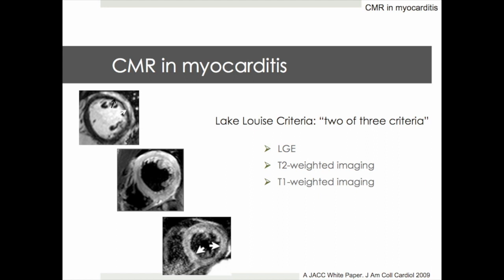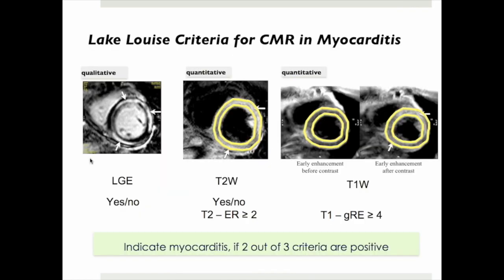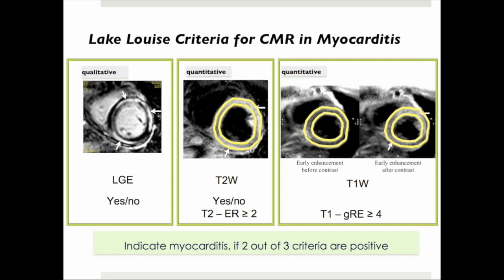Lake Louise criteria are a composite of myocardial late gadolinium enhancement, T2 and T1 weighted imaging. This includes the presence of late gadolinium enhancement in a typical myocarditic pattern with a corresponding increase in T2 signal, as well as an increase in relative measures including an edema ratio of more than 2 and a global relative enhancement ratio of more than 4. The findings indicate myocarditis if 2 out of 3 approaches are positive.